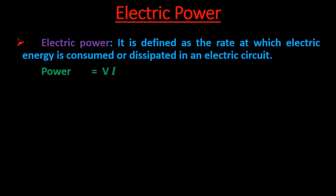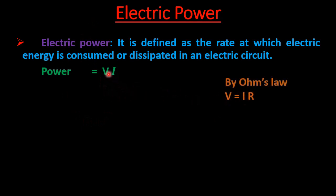The formula for power is: Power = Voltage × Current, so P = V × I. Using Ohm's law (V = IR), the formula can also be written as P = I²R and P = V²/R. All three expressions are related to electric power.